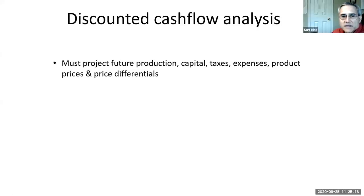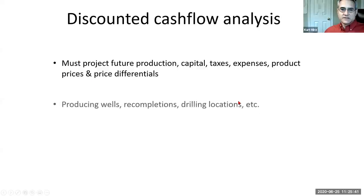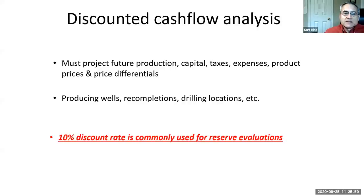To do a discounted cash flow analysis, you have to estimate future production from your wells, capital expenditures to drill them, production taxes, operating expenses, and future oil and gas prices. You have to do a decline projection on each well and make a rate profile for each recompletion or drilling location with timing, cost, and operating expense. You also have to pick a discount rate. In most U.S. reserve evaluations, we use a 10% discount rate, which the SEC specifies for public companies.